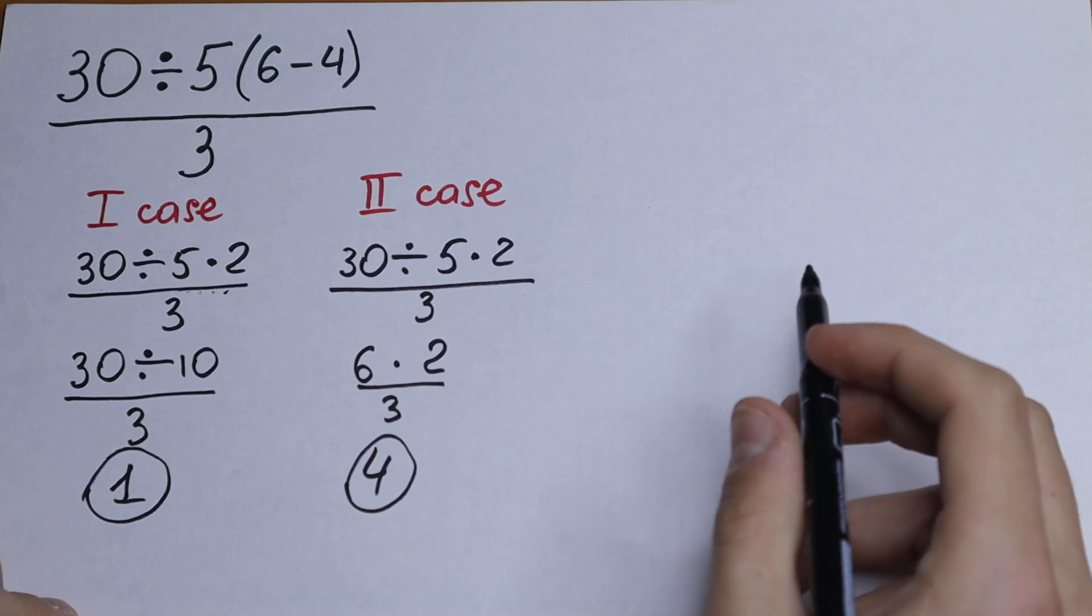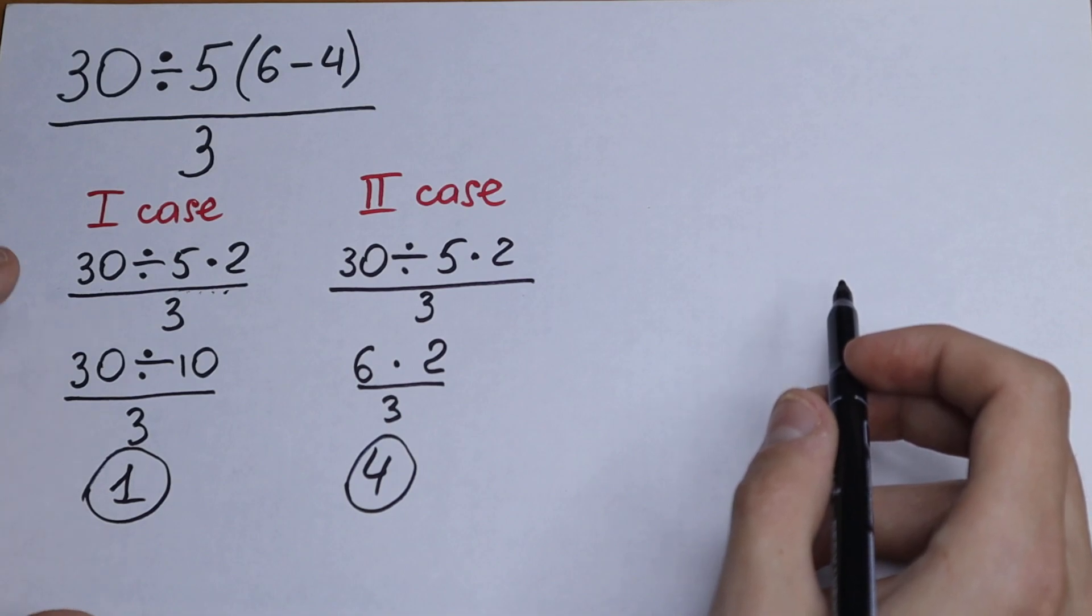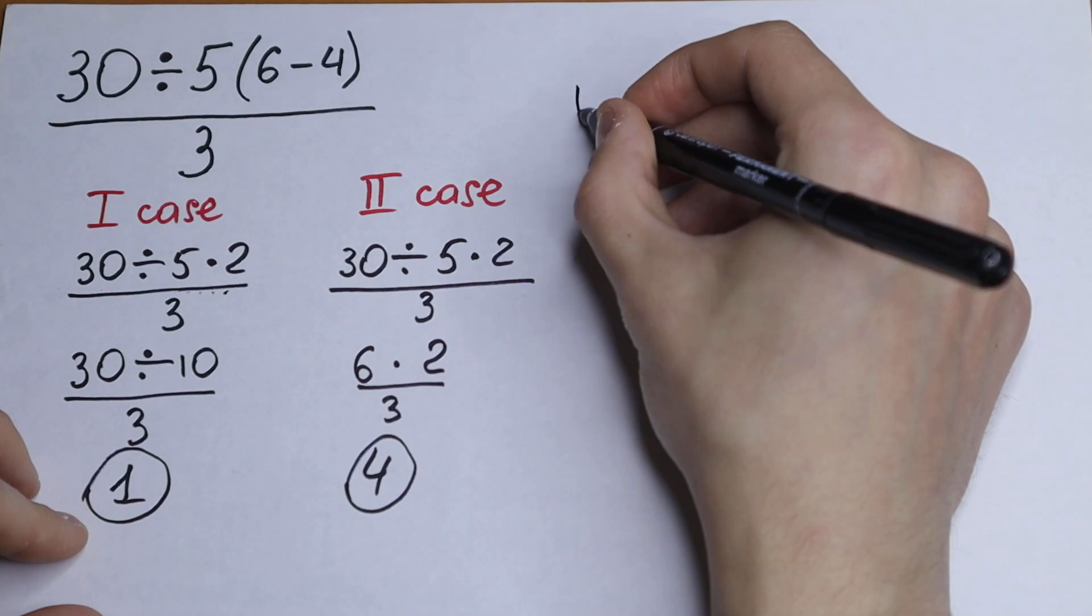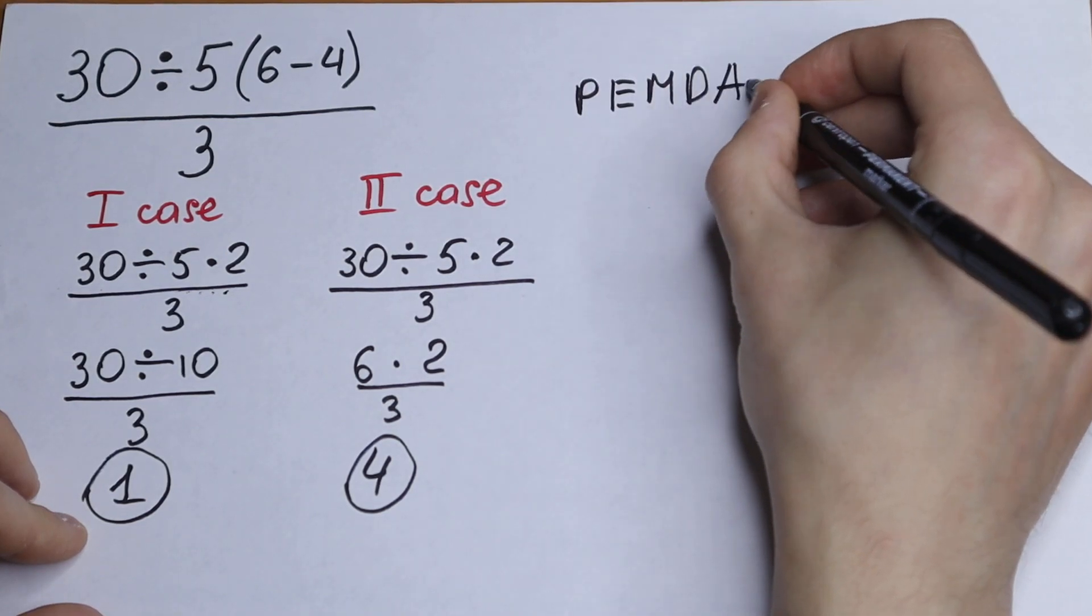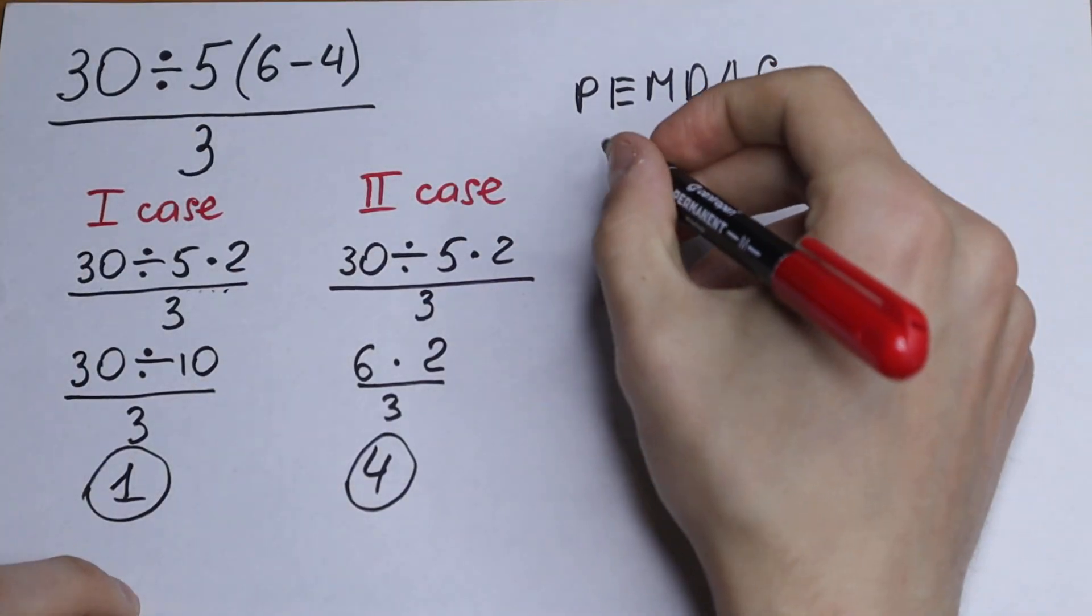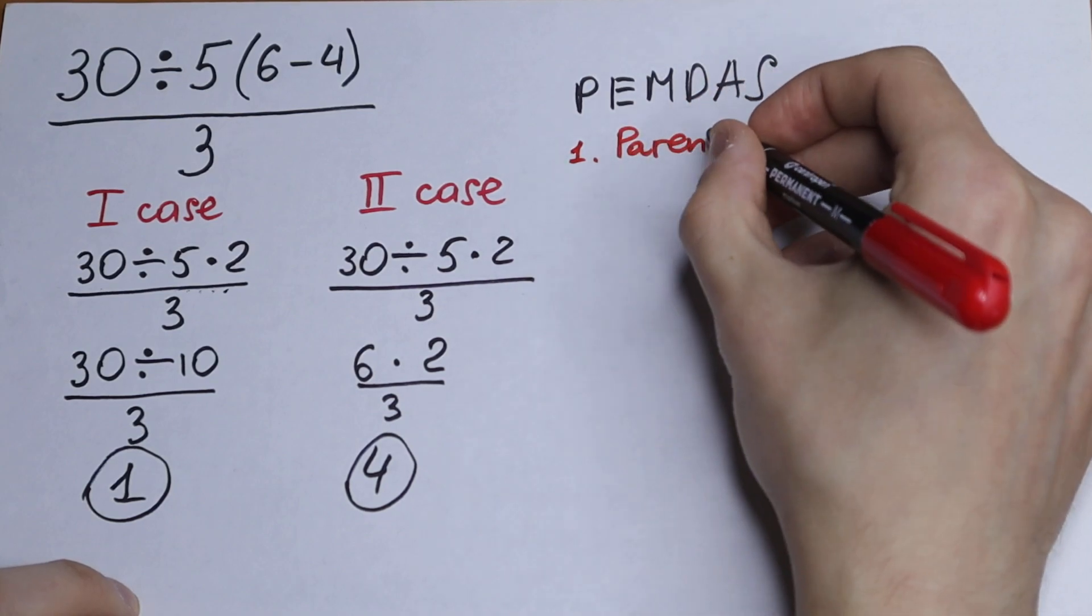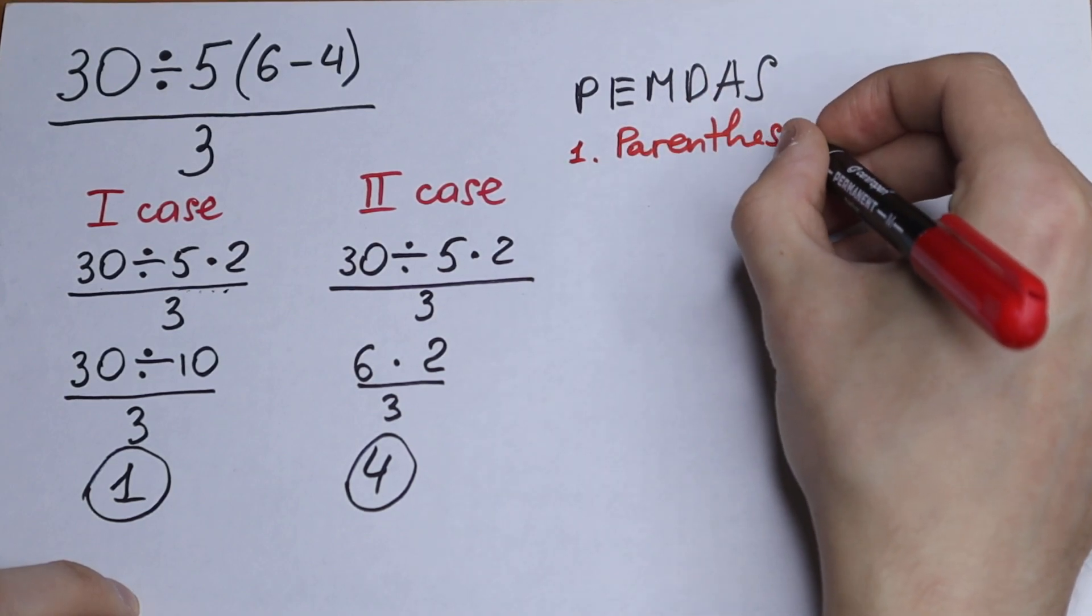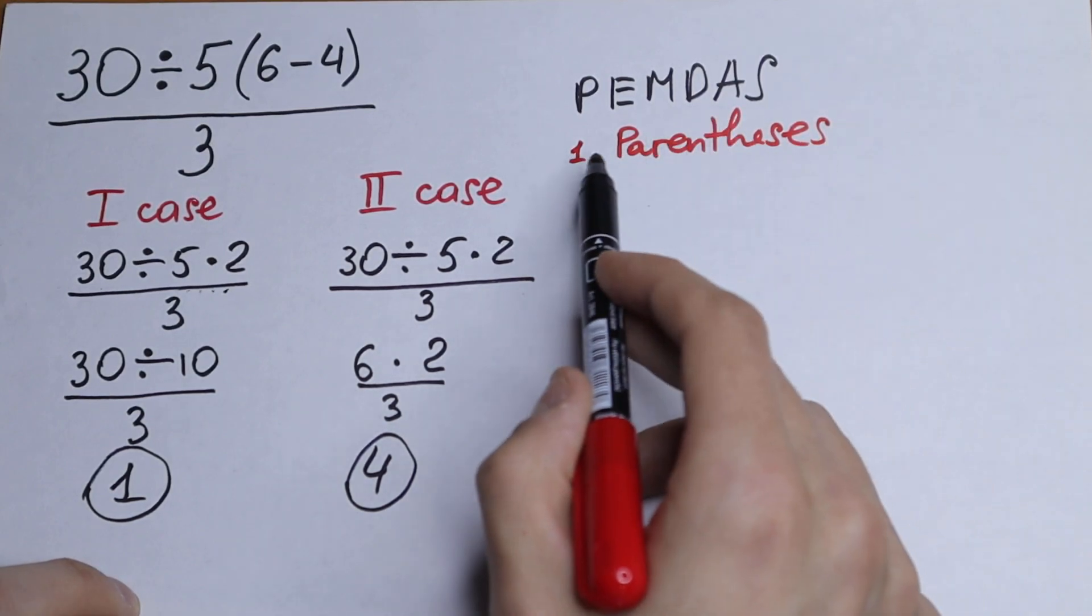How can you do this? Which one is correct? I want to show you a PEMDAS order rule. So what is this order? PEMDAS. The first parentheses, which is correct. We use this order.